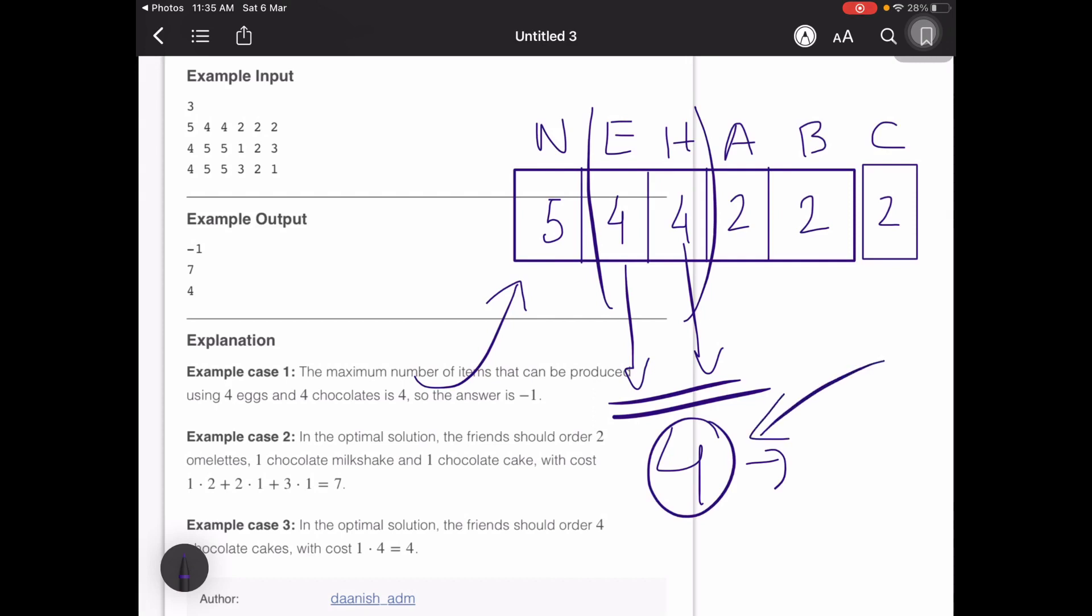That is the maximum amount of items that I can create from these eggs and chocolate bars, but my n is greater than that. So we will not be able to place an order and hence we would return minus one to the console.